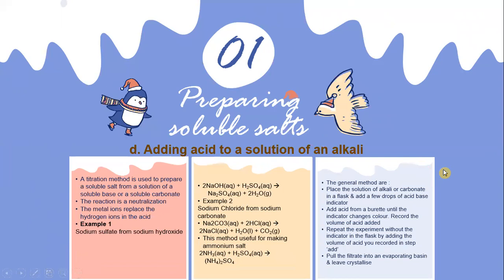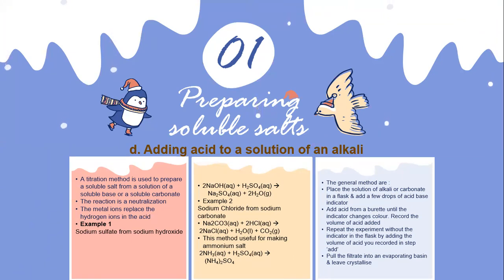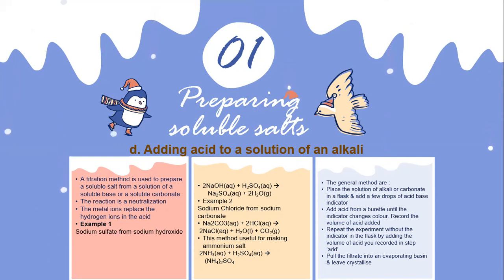Preparing a soluble salt by adding acid to a solution of an alkali — a titration method is used to prepare a soluble salt from a solution of a soluble base or a soluble carbonate. The reaction is a neutralization, and the metal ion replaces the hydrogen ion in the acid. Example: sodium sulfate from sodium hydroxide.